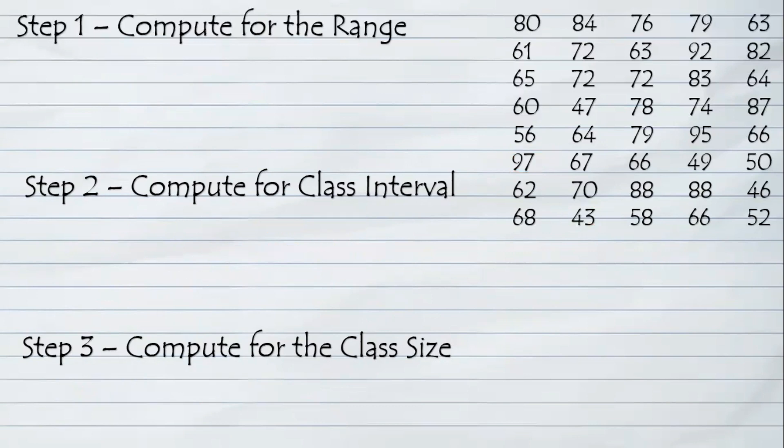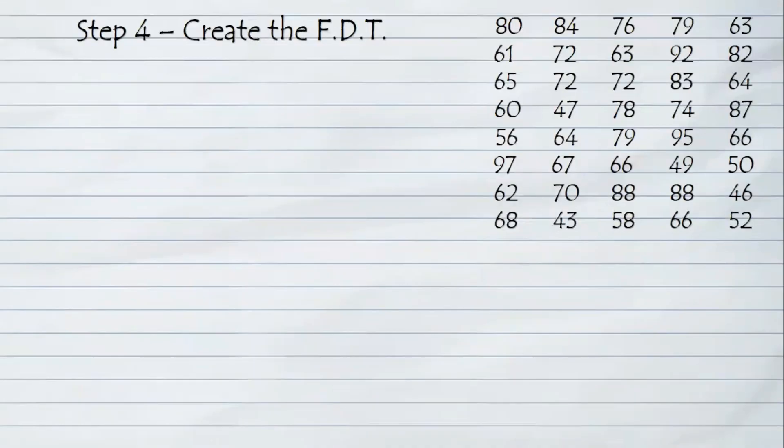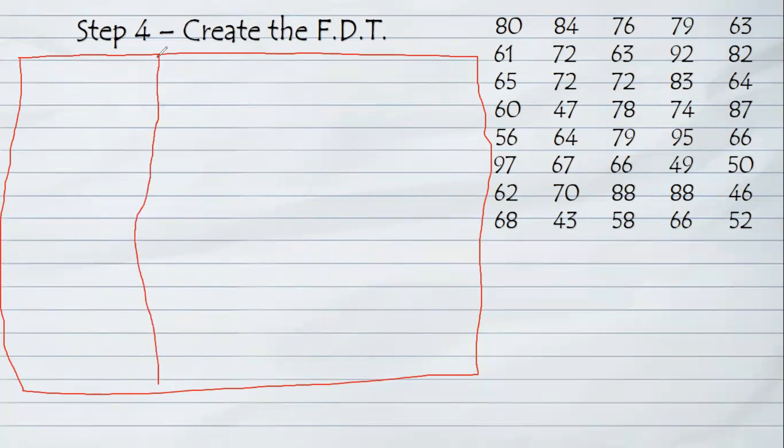Now, we can proceed directly to the table which is the frequency distribution. First thing you will do in creating frequency distribution is a table form. Then create three columns. If you create three columns, you will first write on the first column a class interval, followed by a tally, and followed by the frequency. These are the basic elements of your table or the frequency distribution table.